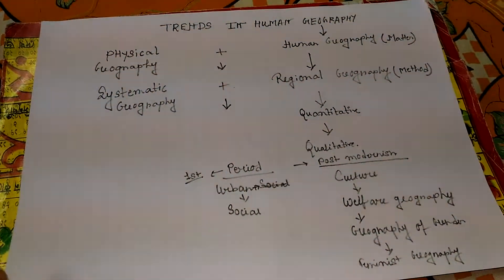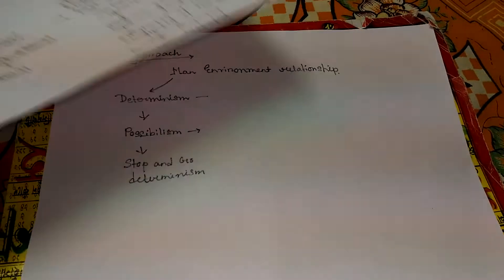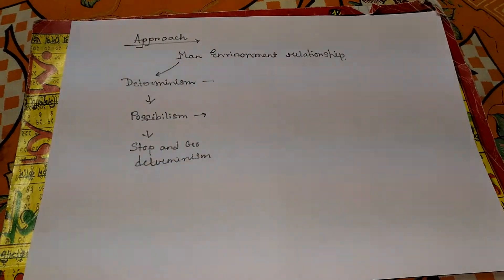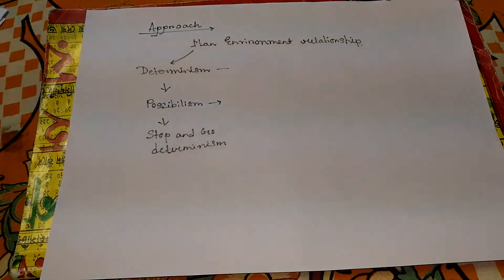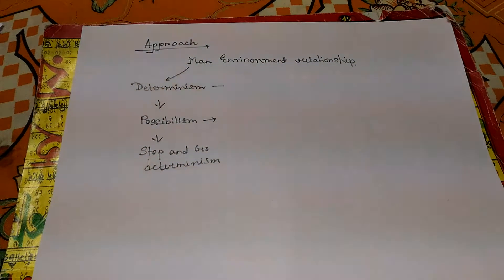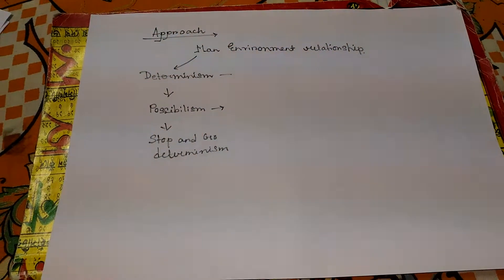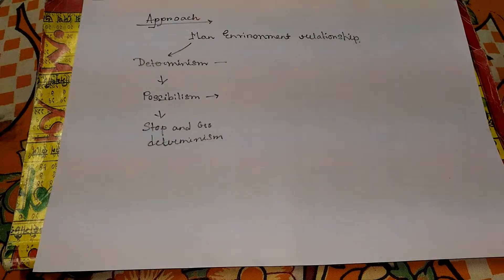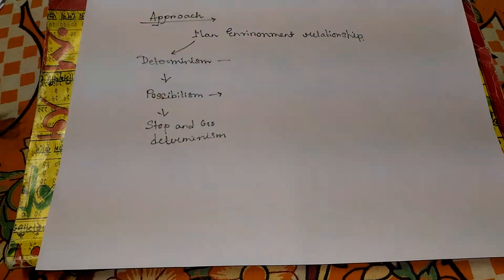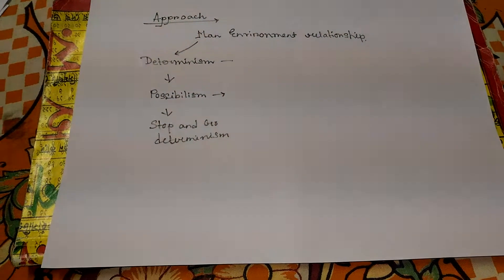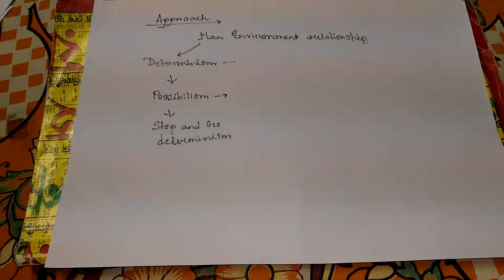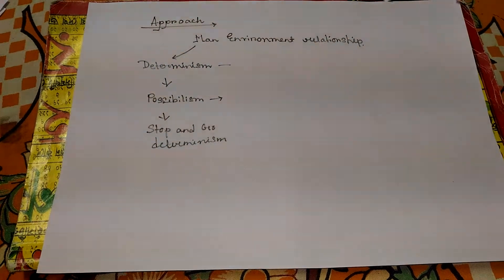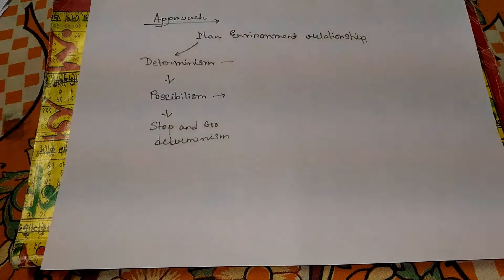The final section is the approaches of human geography. When people first tried to understand the man-environment relationship, they emphasized environmental superiority — the idea that the environment is superior to human skills, knowledge, and civilization. People were seen as having to follow the rules and regulations of the environment in order to survive. This concept was strongly supported by German geographers and other ancient geographers.